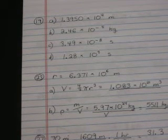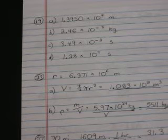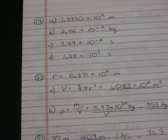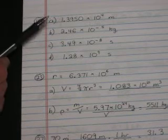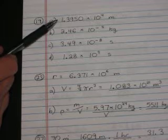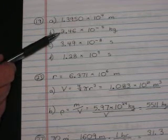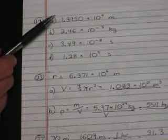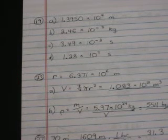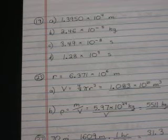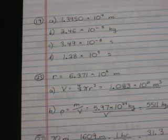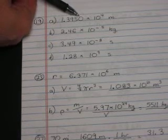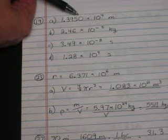Question 19. Express the following in scientific notation. Remember that scientific notation is always expressed as the digit, one digit before the decimal point. And that digit will always be something between 1 and 9. So there are the answers. A is 1.3950 times 10 to the fourth meters. I've added in that zero.